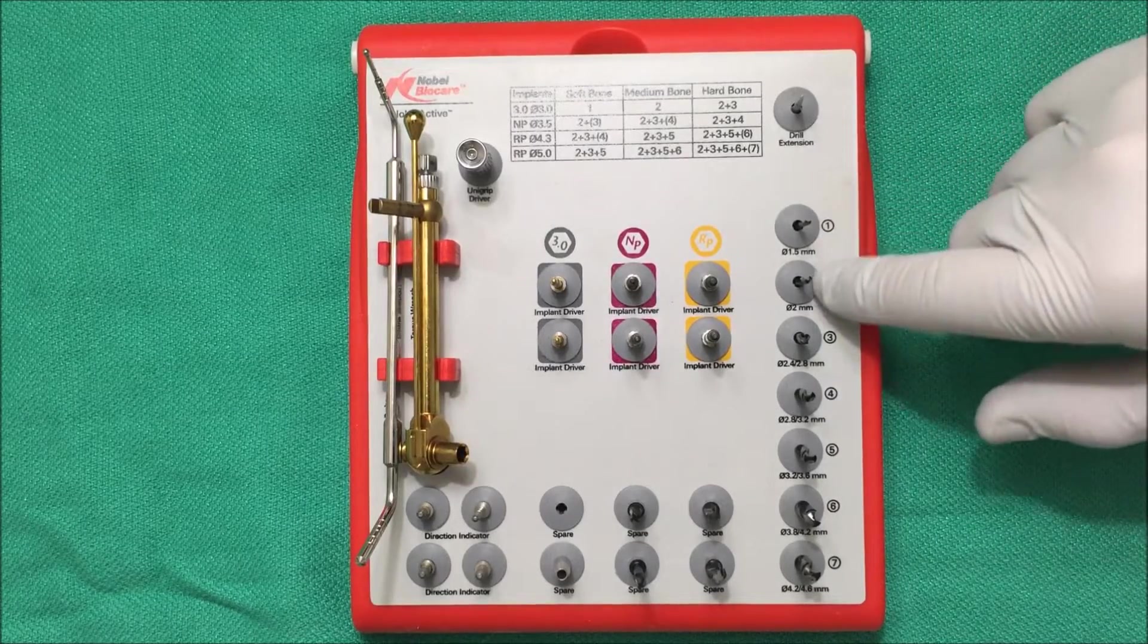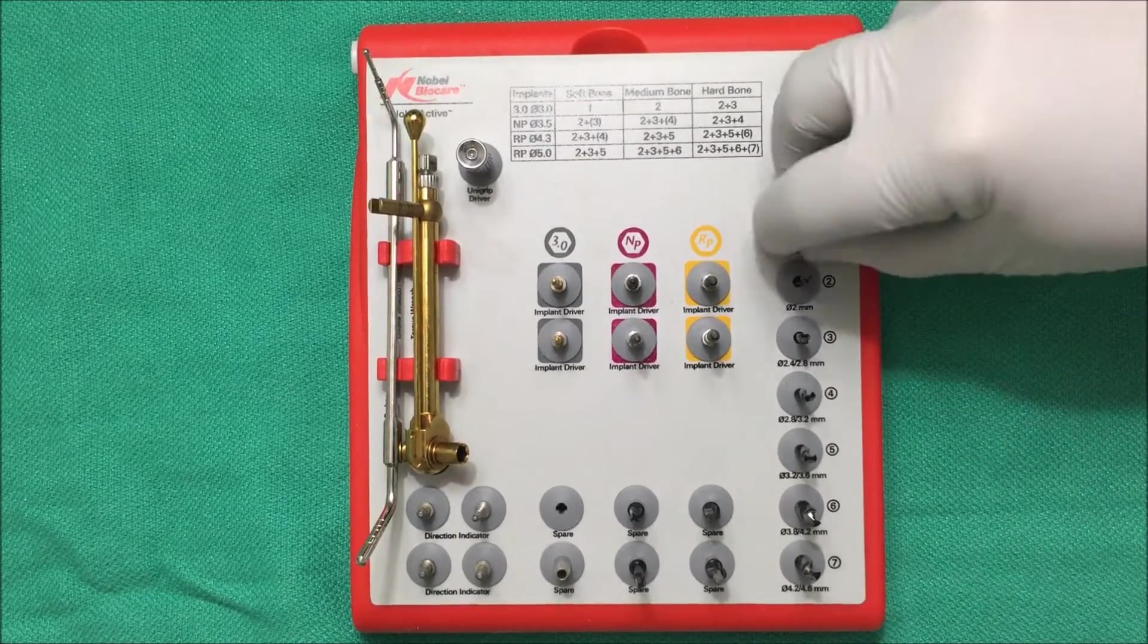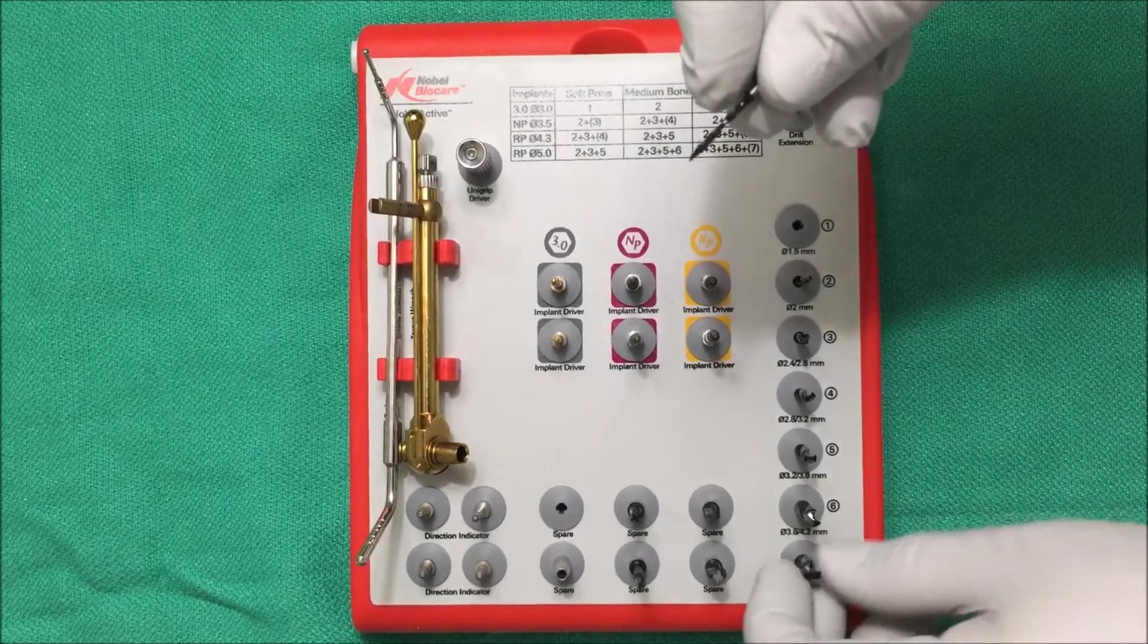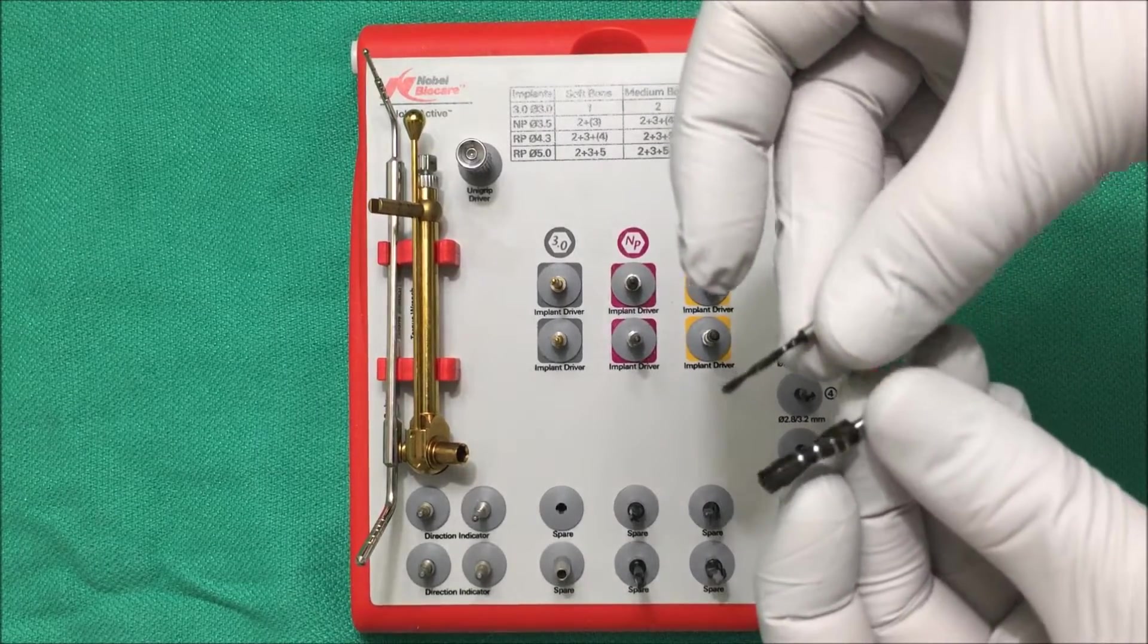Right below it you have all the osteotomy drills starting at 1.5 for the lowest diameter and 4246 for the widest diameter.